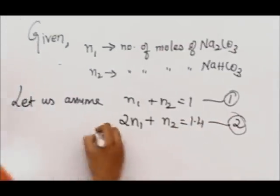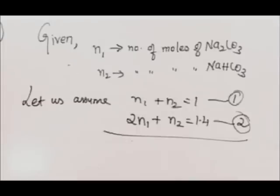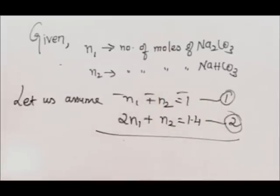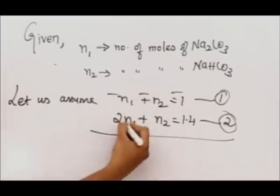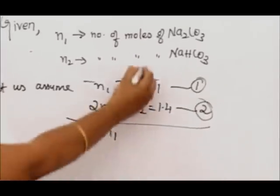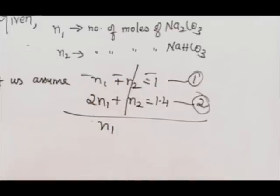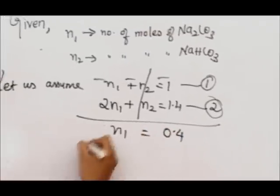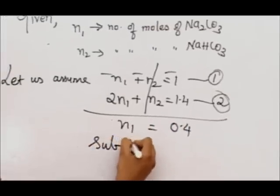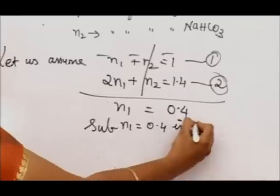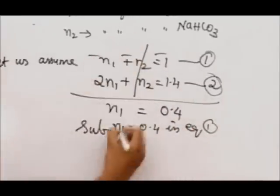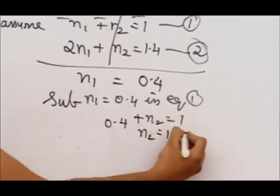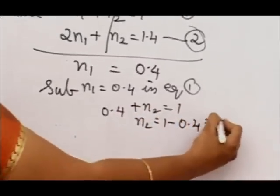Now we are going to solve this system of equations. Subtracting the equations: 2n₁ minus n₁ is n₁, plus n₂ minus n₂ cancels, so 1.4 minus 1 is 0.4. Therefore n₁ equals 0.4. Substitute n₁ equals 0.4 in equation 1: 0.4 plus n₂ equals 1, so n₂ equals 1 minus 0.4, which is 0.6.